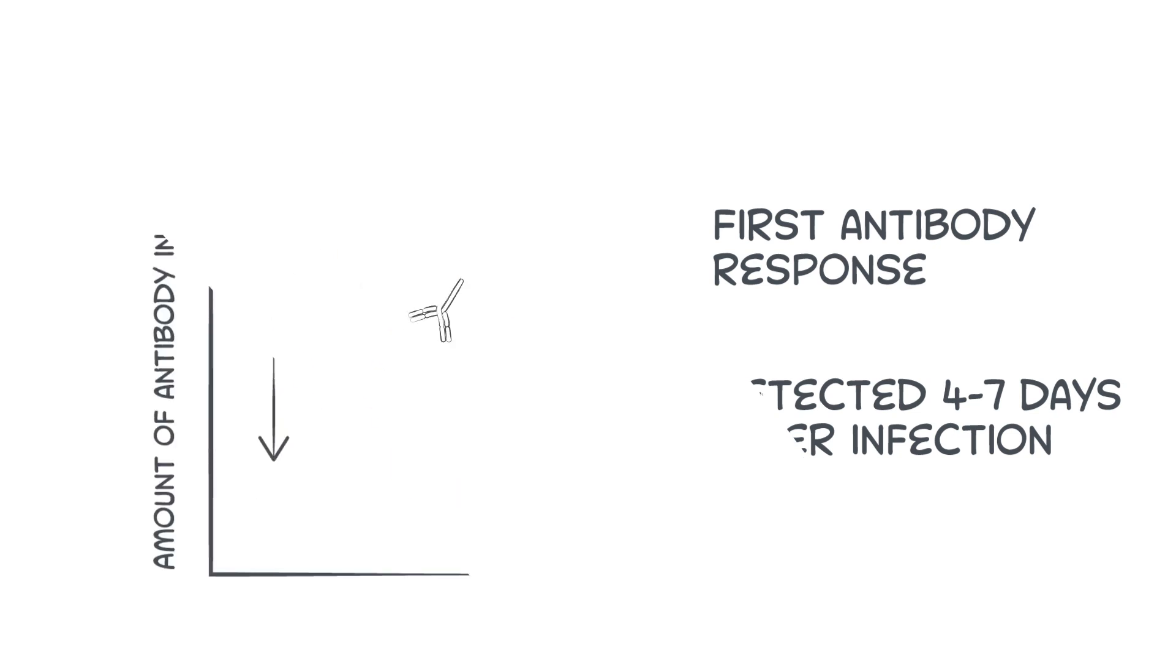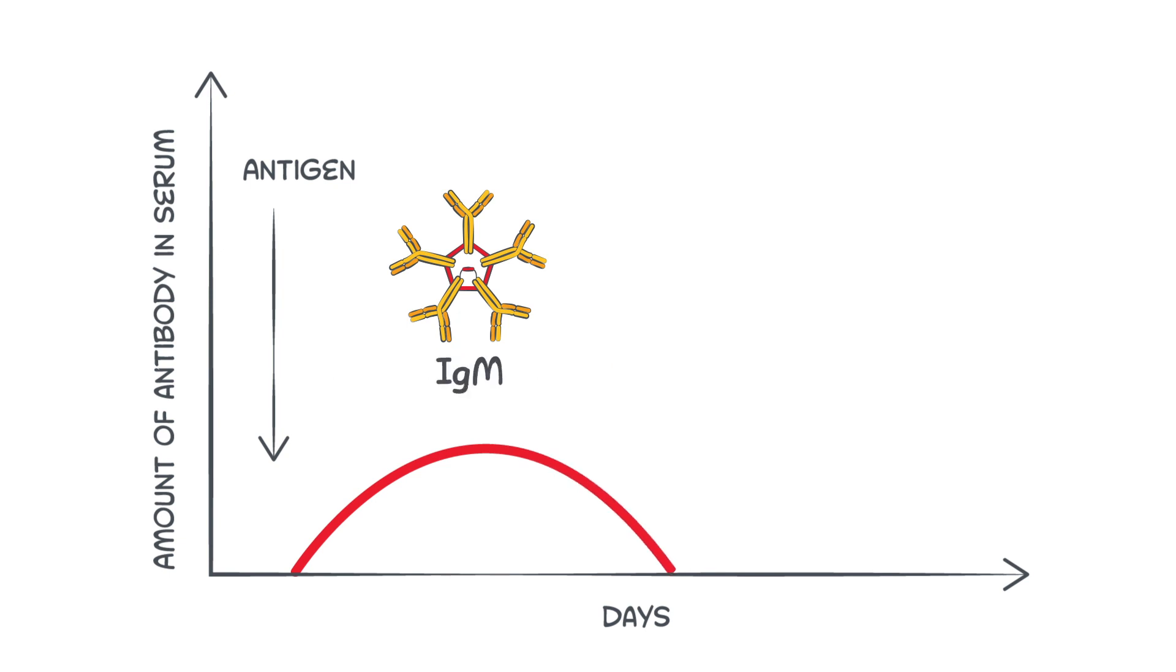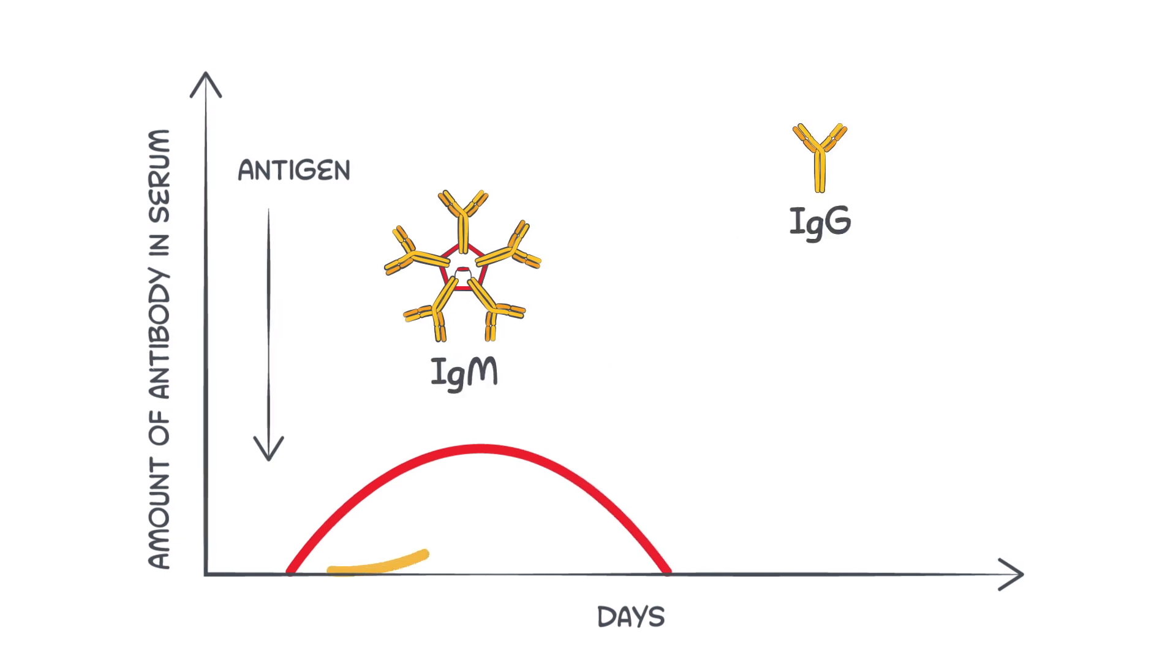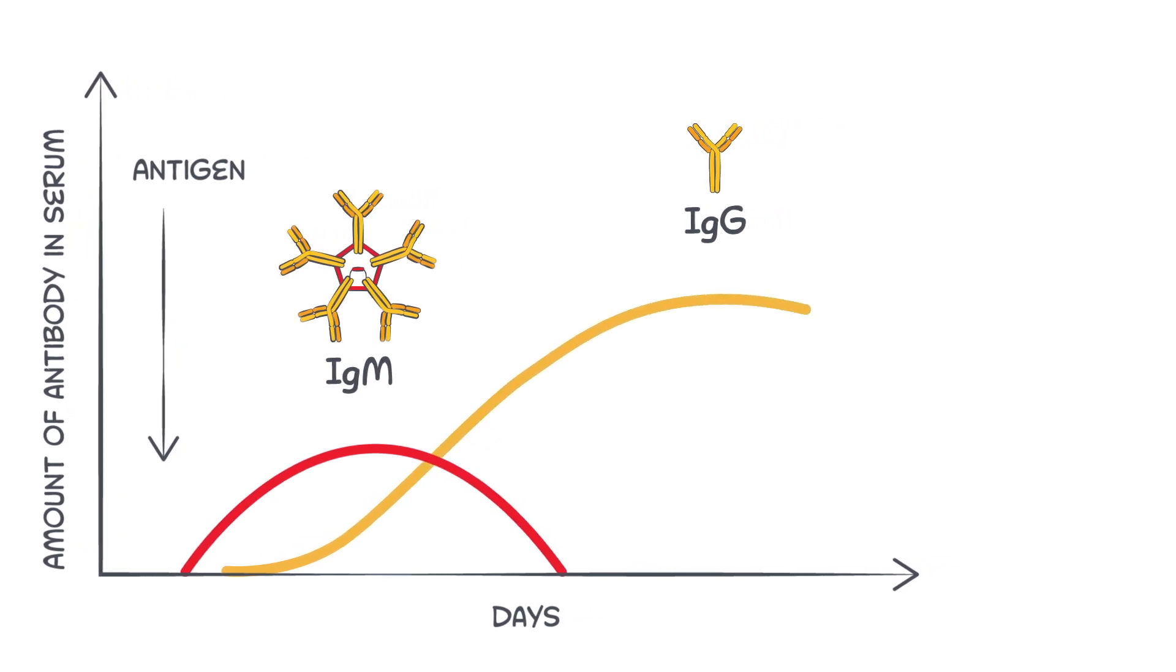IgM antibodies are short-lived and may appear while the virus is still present. The IgG test detects antibodies associated with a longer-term immune response.